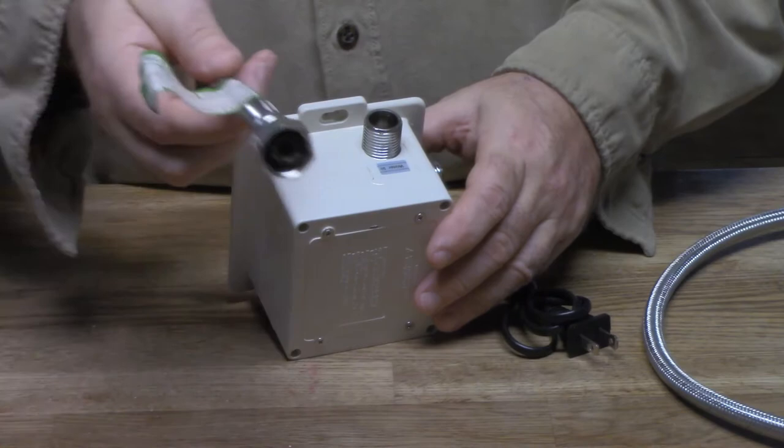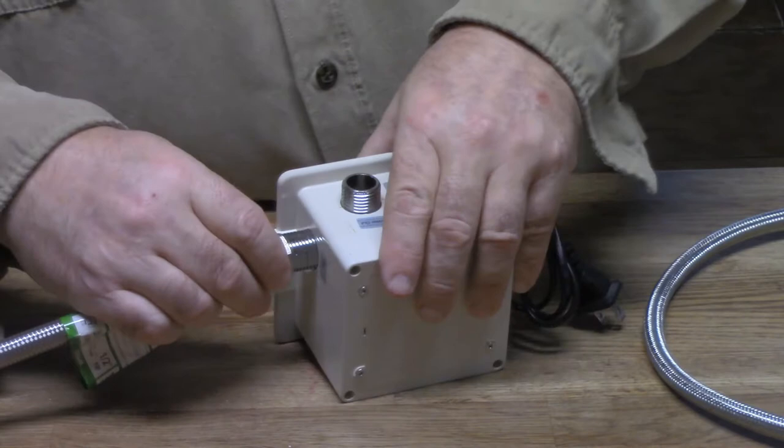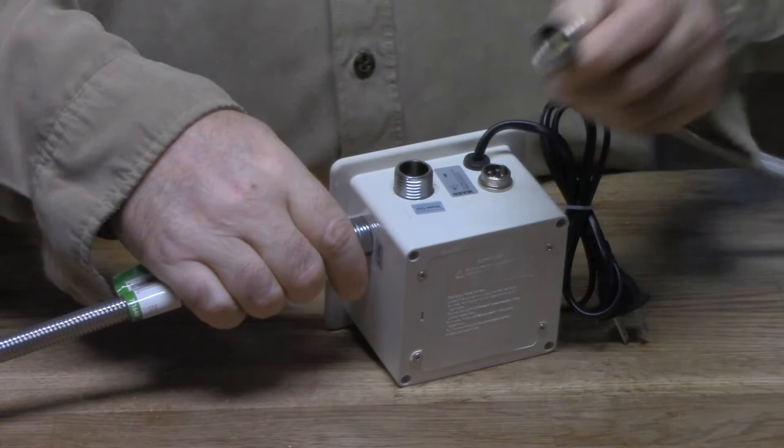So before I even get in there, I'm going to go ahead and plug the end to the end. This goes to your water supply. So we're going to go ahead and attach that before we even get up under the sink. You can use plumber's putty, but these things have gaskets inside them. So they should hold pretty good.